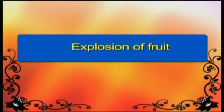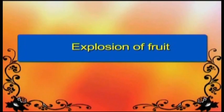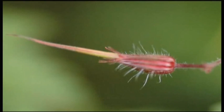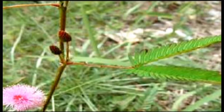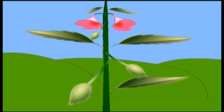Explosion of fruit. Fruits of plants such as balsam, pea, geranium and touch-me-not burst open and explode when they are dry. The seeds get thrown off and are scattered away from the mother plant.